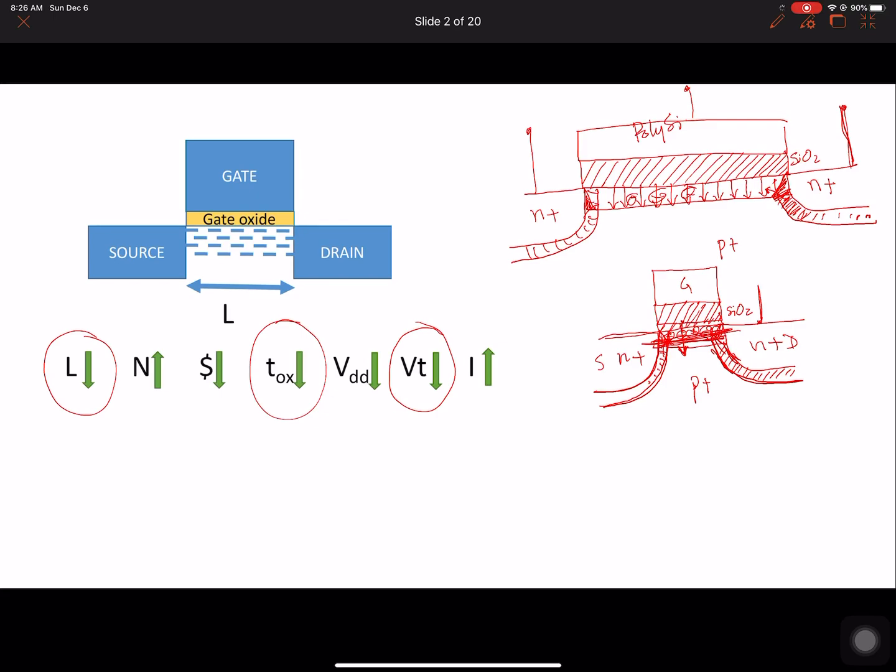So what happens is, on threshold voltage, this is the horizontal length and this is voltage. As you start decreasing the transistor length, VT starts coming down like that, and we don't want that. We don't want that because, first, we rely on a transistor to be on for a certain time and then off for a certain time. So this going down means the transistor will just stay on, which is not what we want. That's not the switch we want.